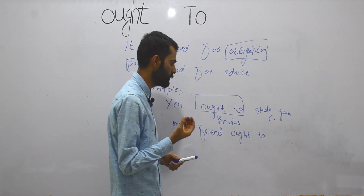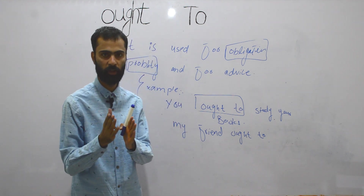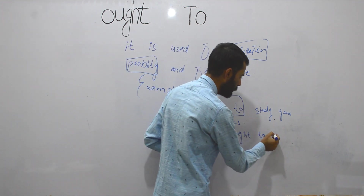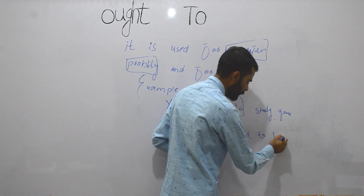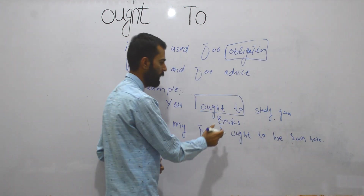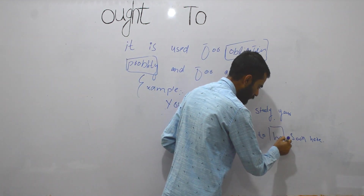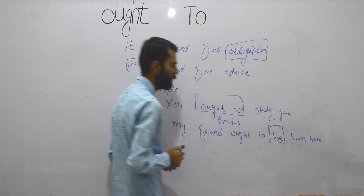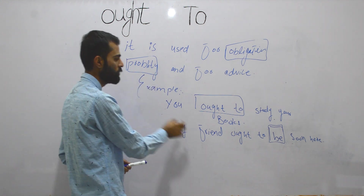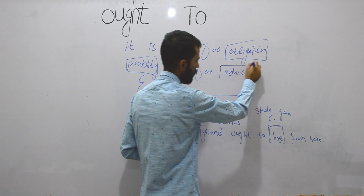For probability — when you are making predictions about the future, you use 'ought to be'. For example: 'My friend ought to be here soon.' Here 'be' is used for the future when you are making sentences about probability.